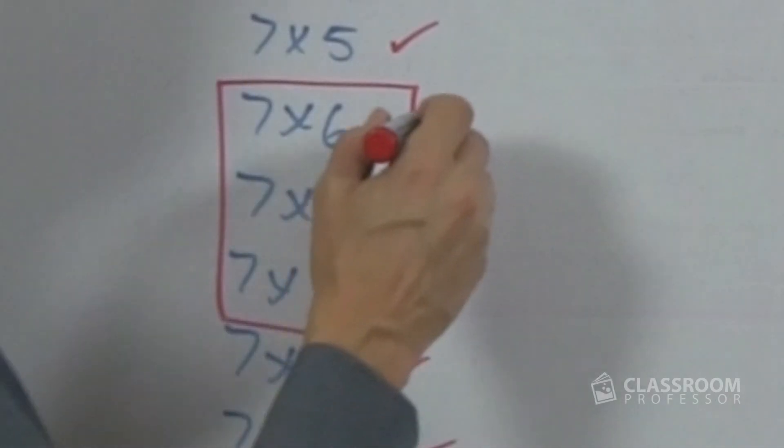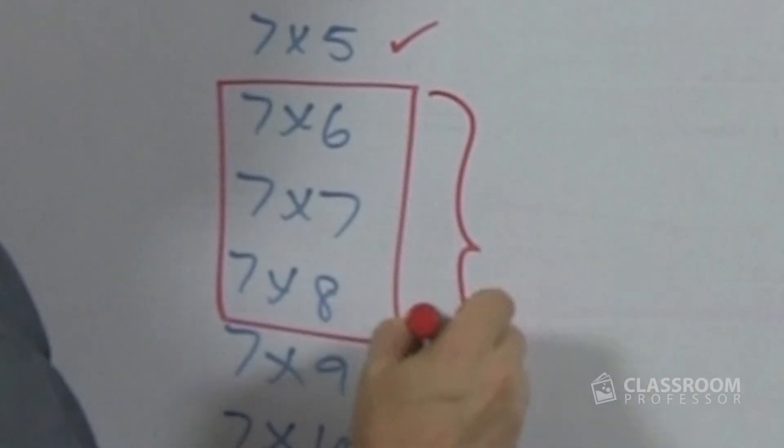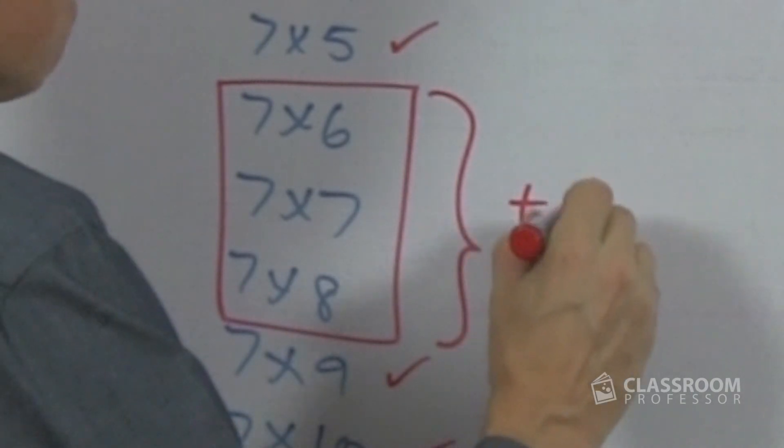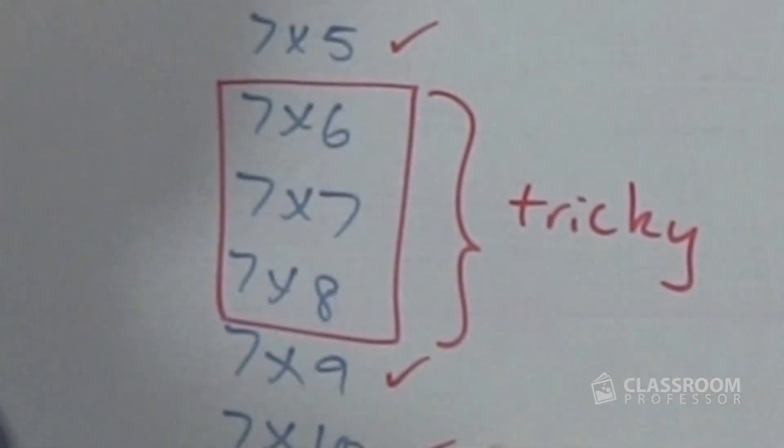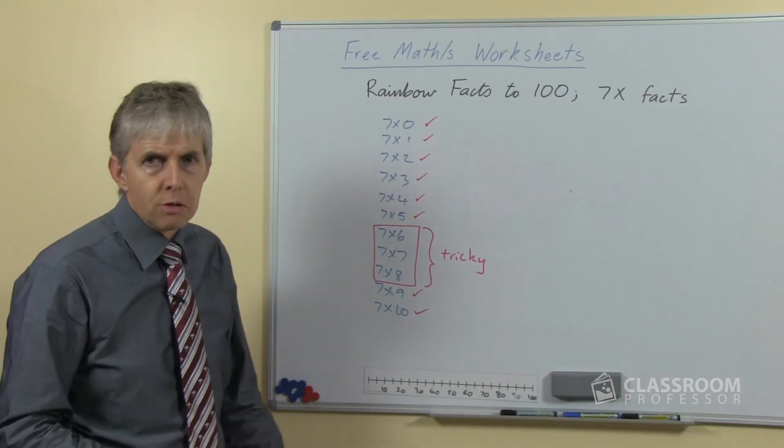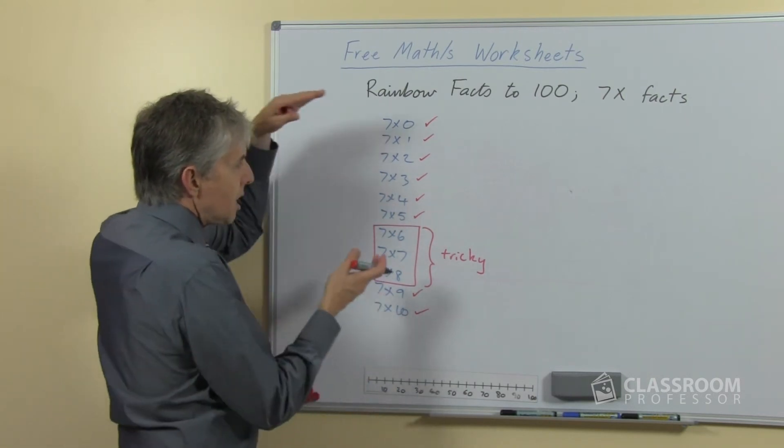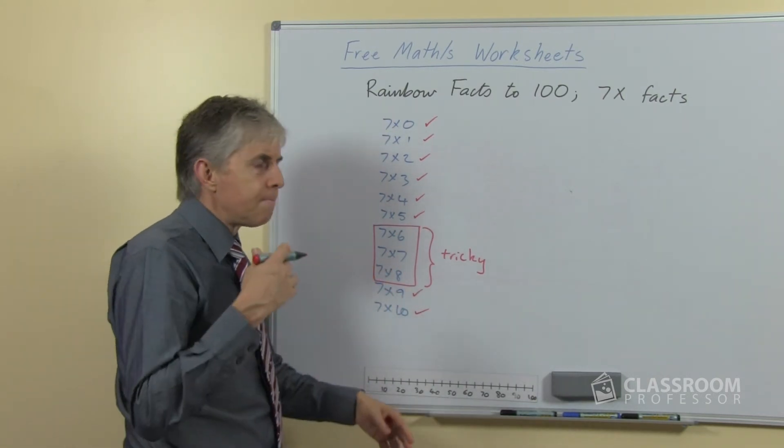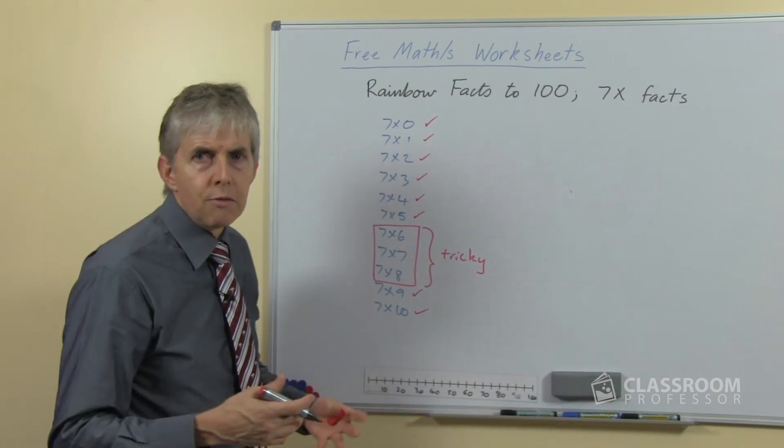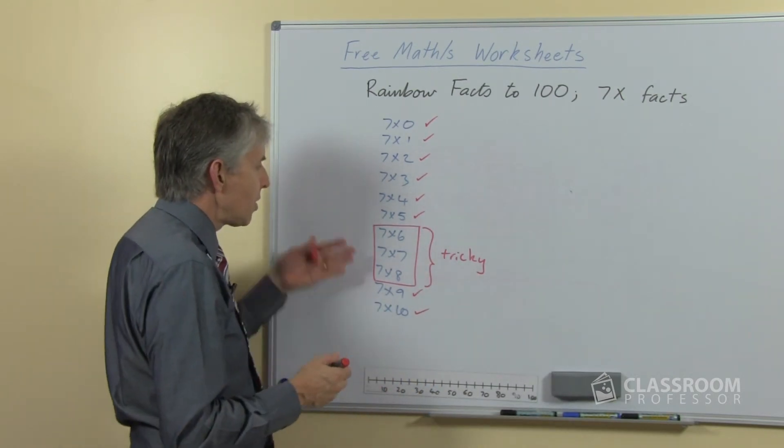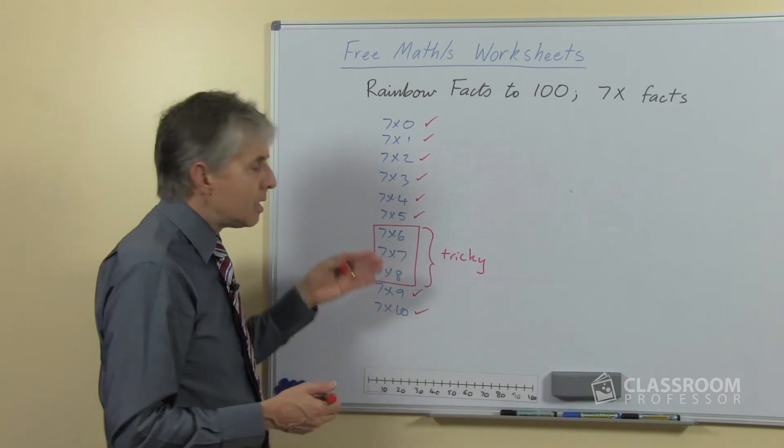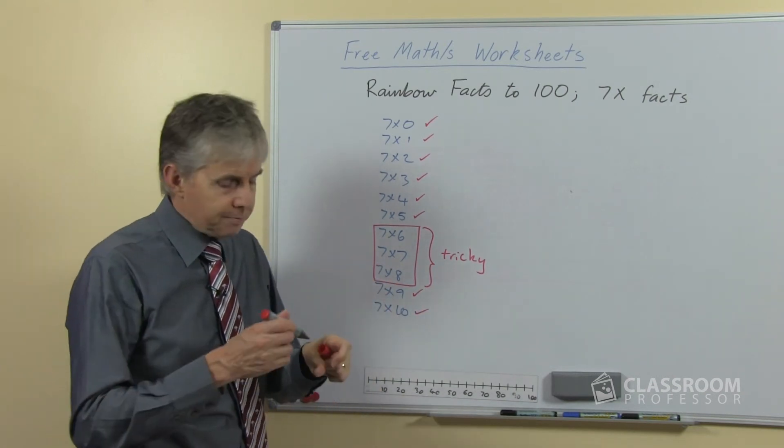So basically if we focus our attention on those three, in particular, again this is the sort of thing that you could put on to a poster for students, just for them to look at and to remind them of what they've learned about this particular set of number facts. These are the tricky ones, these are the ones you should spend the most time on.